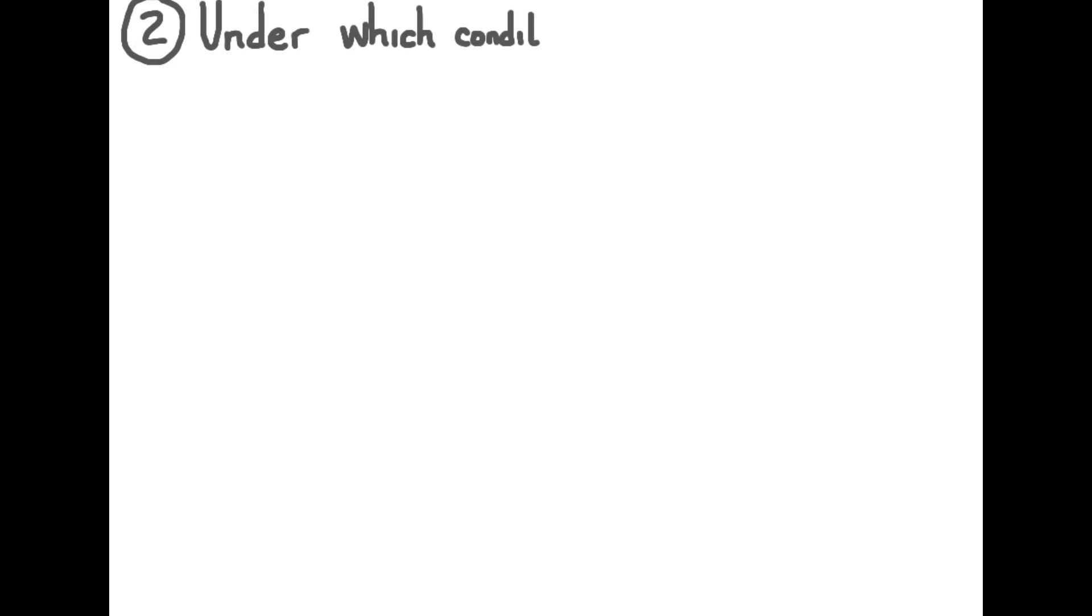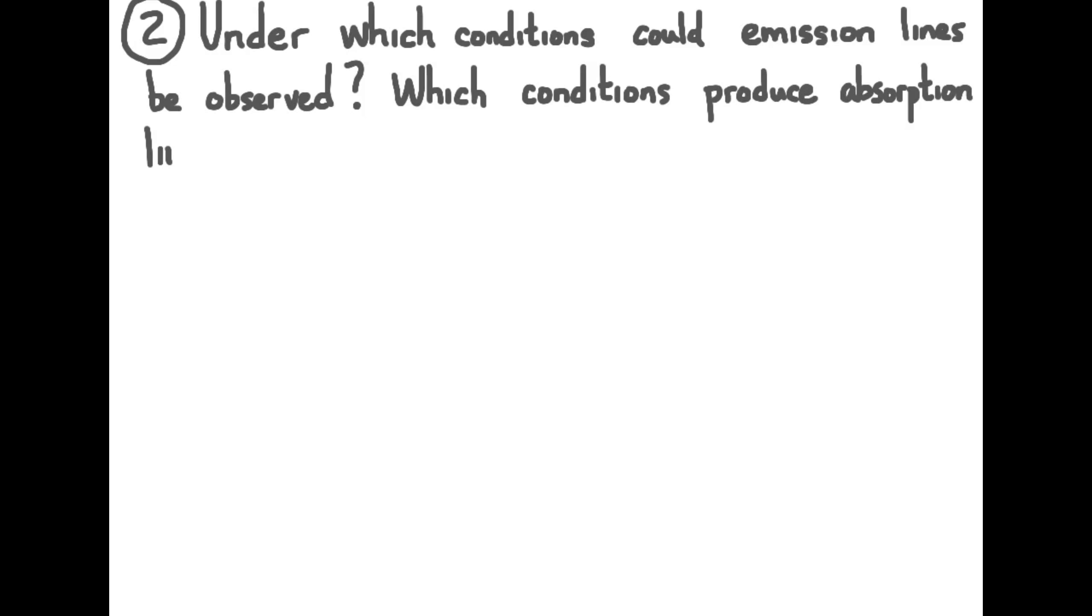Practice question number two goes like this. Under which conditions could emission lines be observed? Which conditions produce absorption lines? Here are three conditions. Light from a distant star is analyzed.